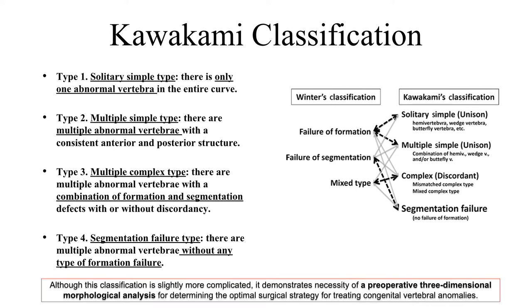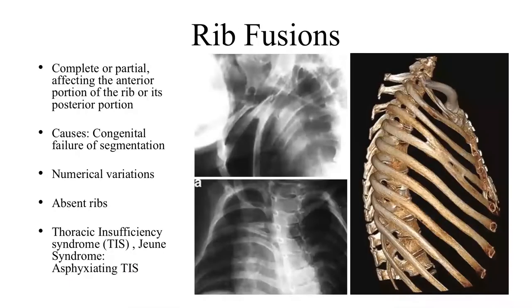Congenital kyphosis is also classified as failure of formation or failure of segmentation. The Coacmy classification is another classification worth mentioning, based on preoperative 3D morphologic analysis for determining the optimal treatment strategy. Type 1 is only one anomaly in the whole spine, Type 2 is multiple anomalies, Type 3 is multiple anomalies with a combination of formation and segmentation defects, and Type 4 is only segmentation anomalies.